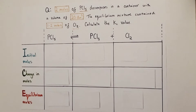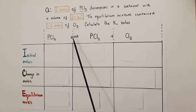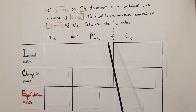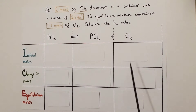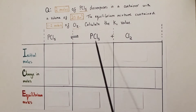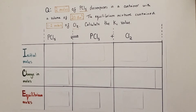You'll always be provided with the symbol equation for that reversible equilibrium reaction. So we've got PCl5 decomposing to form PCl3, phosphorus trichloride, and Cl2, chlorine gas. Immediately I've drawn a table below those three substances to keep my working really organised.